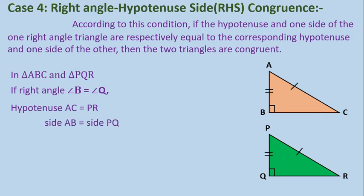So, in this case, if the side AB is equal to PQ, then we can say that triangle ABC is congruent to triangle PQR by RHS congruence.